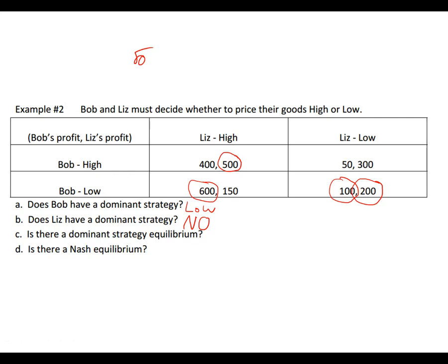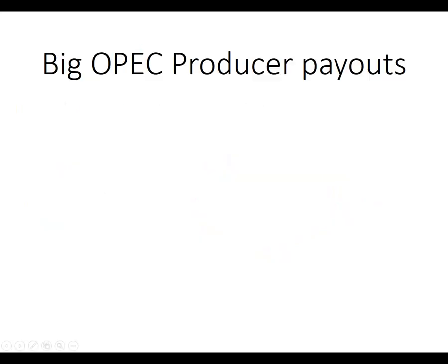If they could collude, they'd both be up in the higher-profit cell. But remember, collusion is illegal. So there's no dominant strategy equilibrium because Liz doesn't have one. But there is a Nash equilibrium: Liz will price low and Bob will price low. Looking at some of the other payouts, this is actually the worst one — but because they're competitive, that's where they're going to end up.